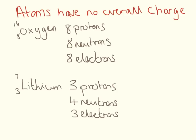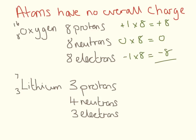Atoms have no overall charge. For oxygen, we can work out it has 8 protons, 8 neutrons, and 8 electrons. Protons: plus 1 times 8 equals plus 8. Neutrons: zero times 8 equals zero. Electrons: minus 1 times 8 equals minus 8. Adding plus 8, zero, and minus 8 gives zero overall charge.